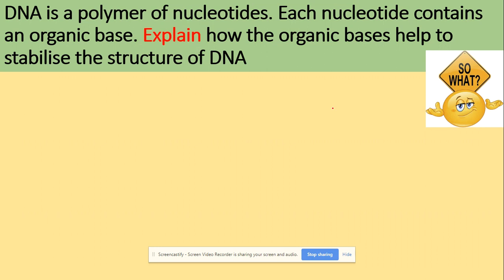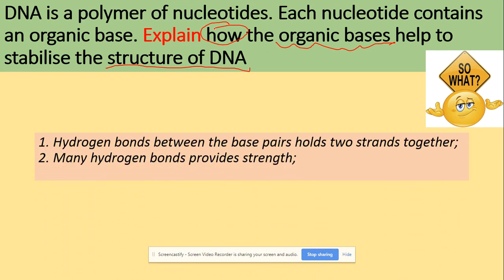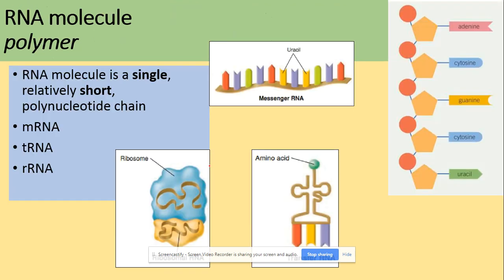These are 'so what' approaches. DNA is a polymer of nucleotides and each nucleotide contains an organic base. Explain how the organic bases help to stabilize the structure of DNA: organic bases are linked to structure - say how. The important thing is how they maintain the structure. Why are they stable? Because you've got many hydrogen bonds that pair with the bases to hold two strands together.